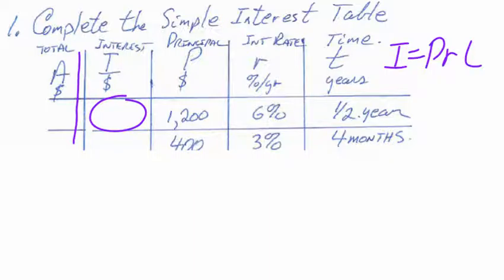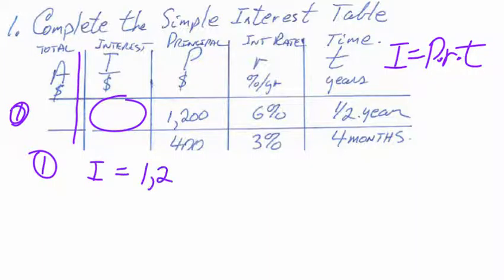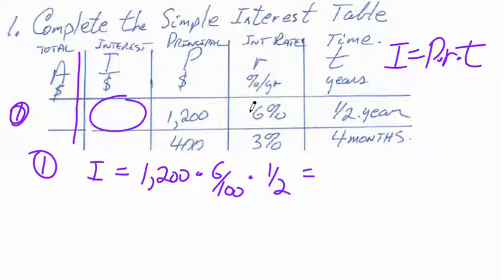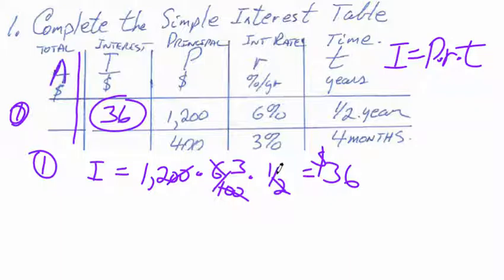Write down the formula: I equals P times R times T. Write down the formula, then plug in the numbers. This first one is pretty easy — it's just a straight plug-in and hit your equals button. Just be careful, because half a year is half a year.